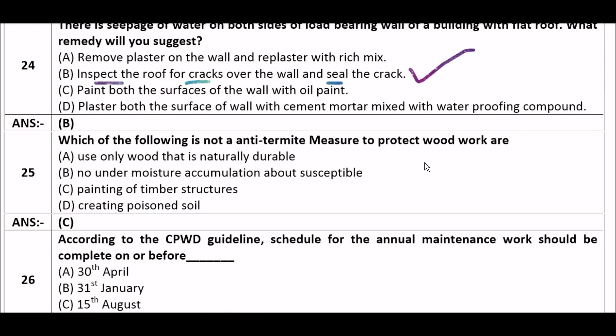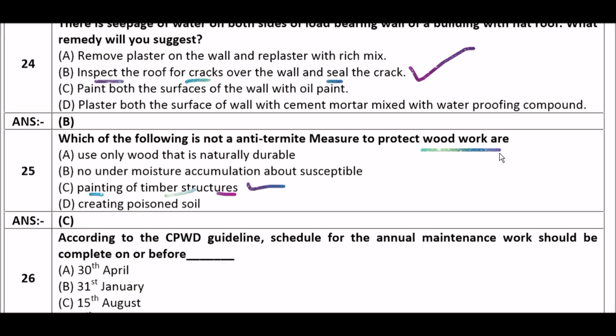Next question: Which of the following is NOT an anti-termite measure to protect woodwork? Option A: use only wood that is naturally durable, option B: no under-moisture accumulation about susceptible areas, option C: painting of timber structures, option D: creating poisoned soil. The right answer is option C — painting of timber structures is not an anti-termite measure to protect woodwork.